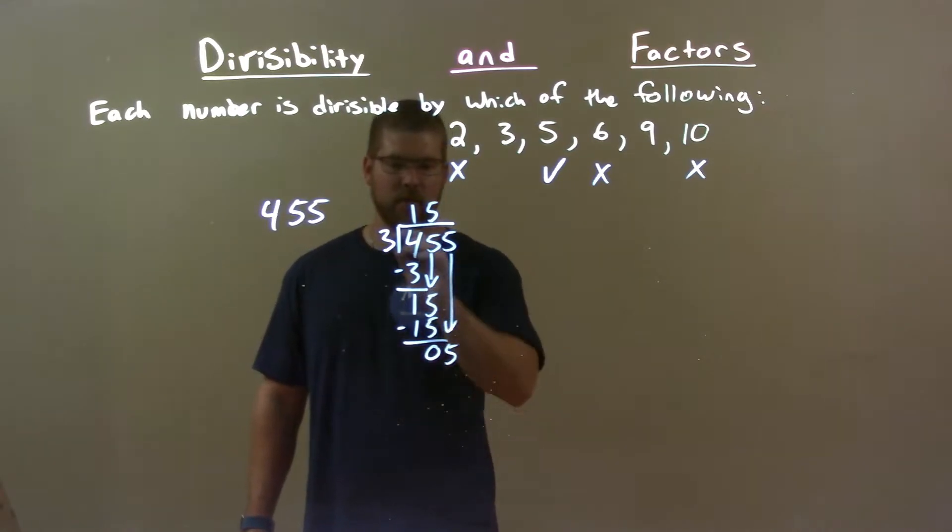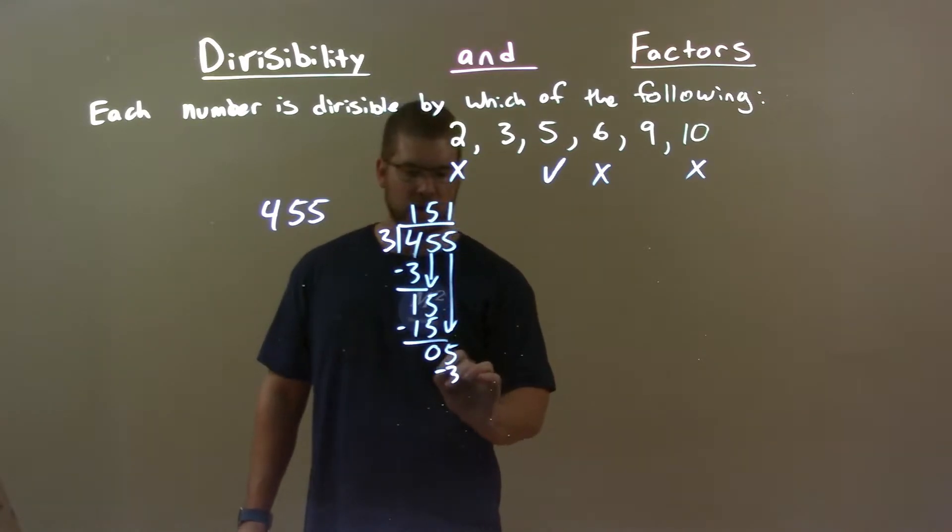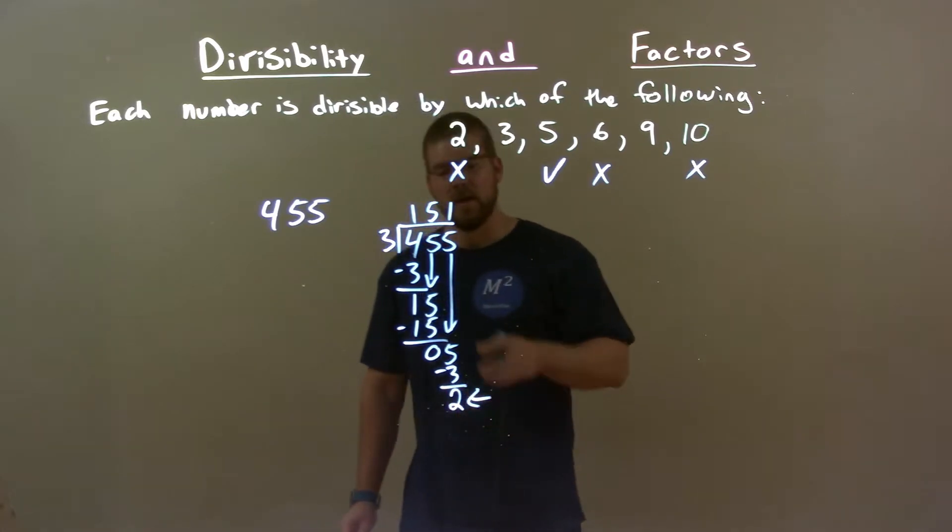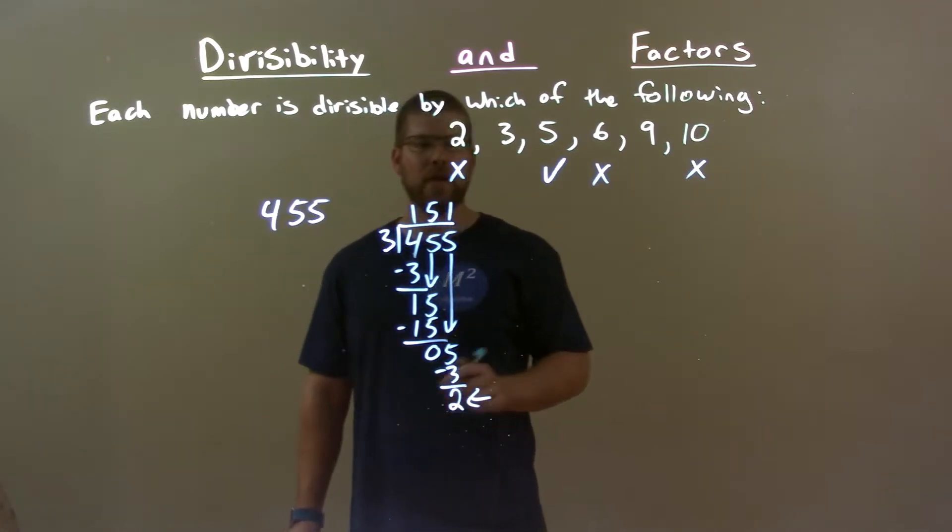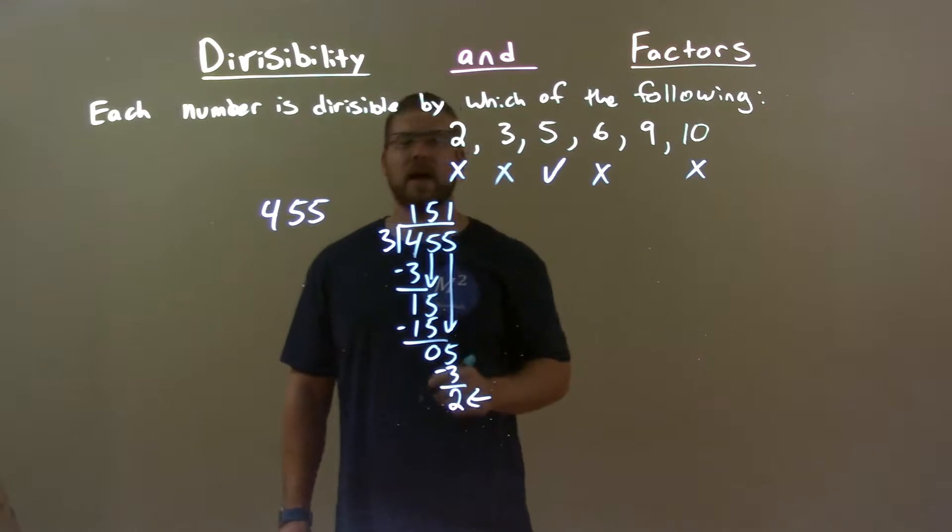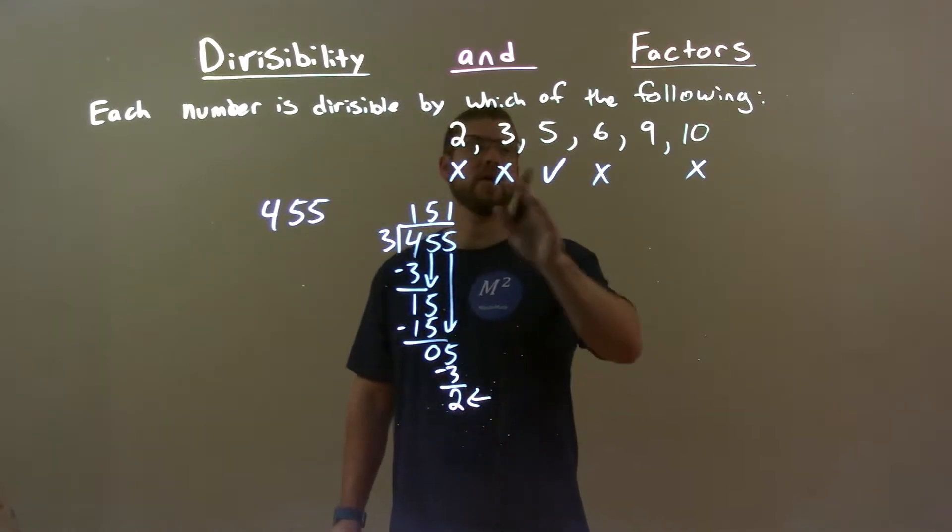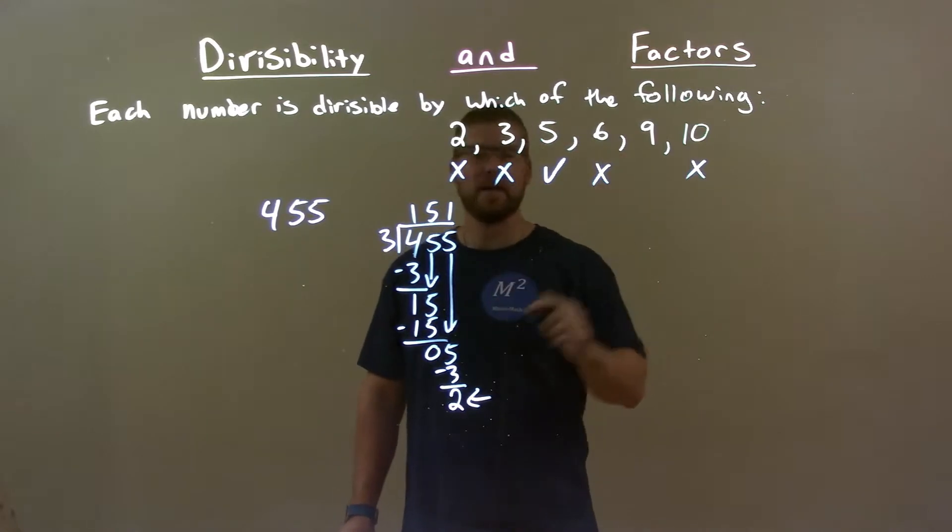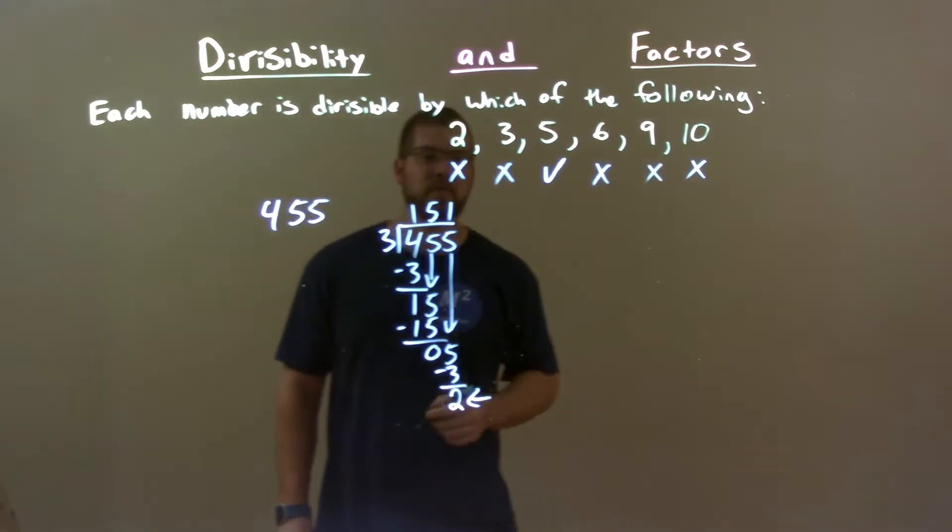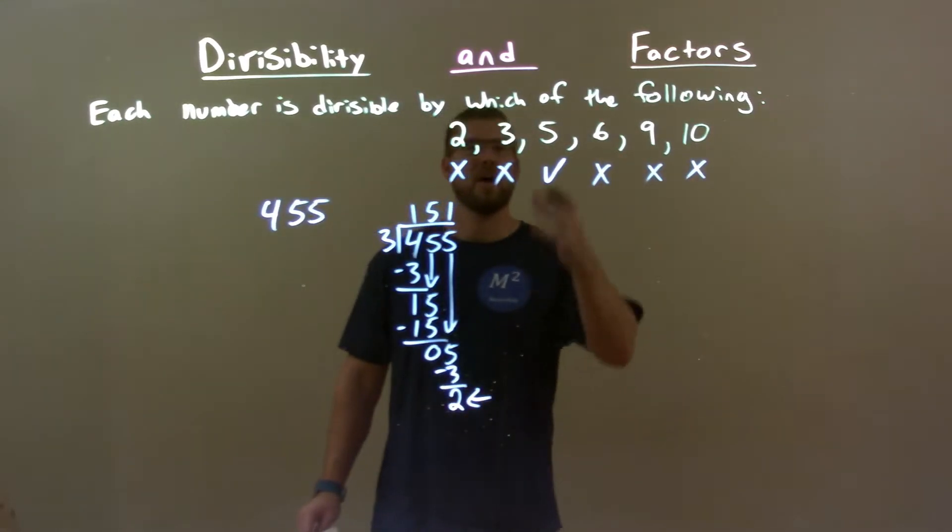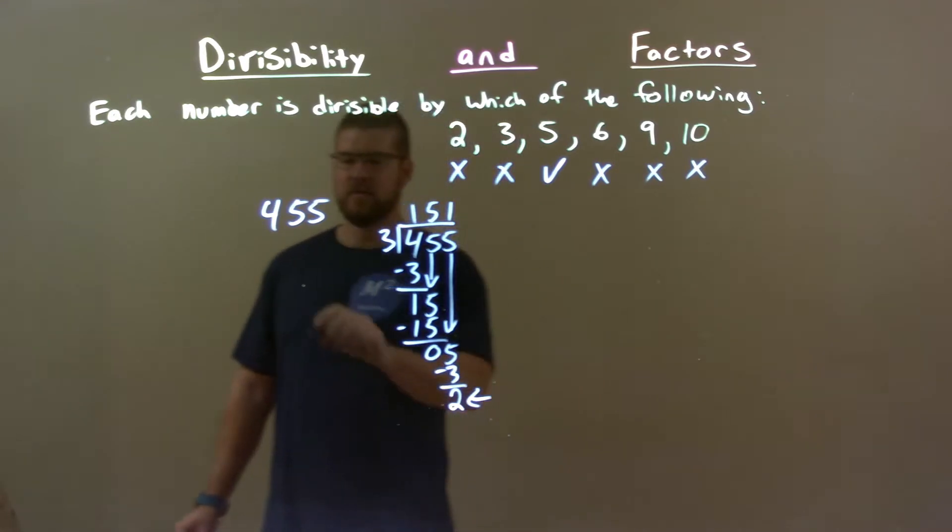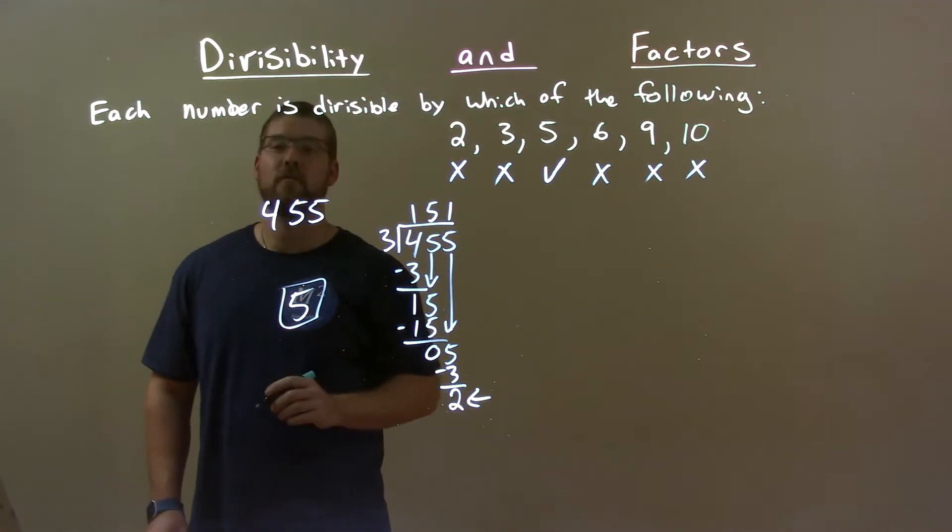Bring down this 5. 3 goes into 5, well, 1 times. 1 times 3 is 3. Subtract the 2, and we get a 2 for a remainder. Since we have a value for our remainder, that tells us that 3 does not go in evenly. And since 3 does not go in evenly, since 3 goes into 9, 9 cannot go in evenly as well. So our only answer here of all the numbers provided is just good old 5.